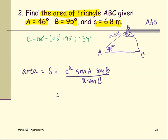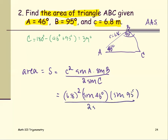And then we place all the numbers into the formula. C is 6.8, so the quantity is 6.8 squared, multiplied by sine of A, which is 46 degrees, multiplied by sine of 95 degrees, all divided by two times sine of 39 degrees.